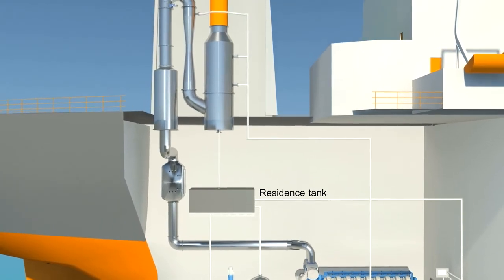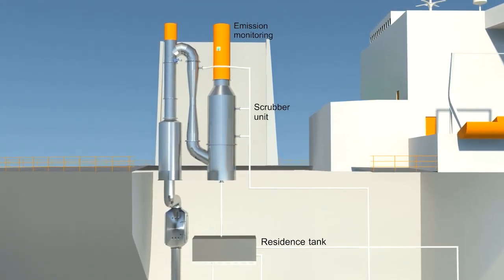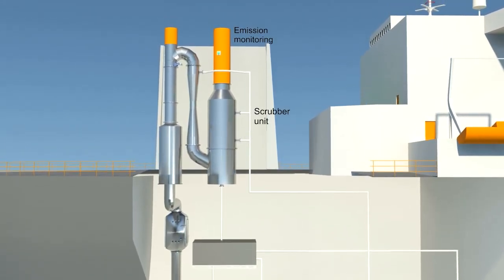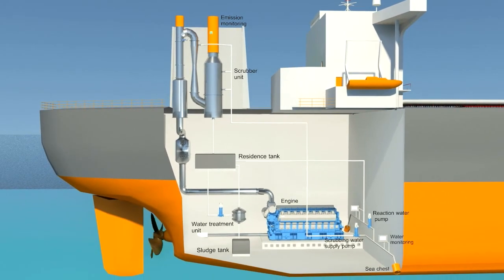The scrubber unit itself removes sulfur oxides and particulates from the exhaust gas and is installed into the exhaust gas funnel. The emission monitoring system automatically monitors the exhaust gas quality, verifying compliance with current regulations.